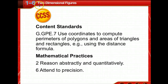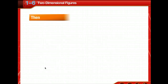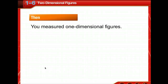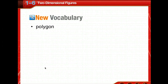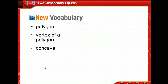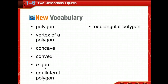Today we're going to be learning about two-dimensional figures — finding the perimeters and areas of polygons, triangles, rectangles, etc., using the distance formula. Previously you've measured one-dimensional figures. Today we're going to identify and name polygons and find the perimeter, circumference, and area of two-dimensional figures. Key vocabulary includes: polygon, vertex of a polygon, concave, convex, n-gon, equilateral polygon, equiangular polygon, regular polygon, perimeter, circumference, and area.